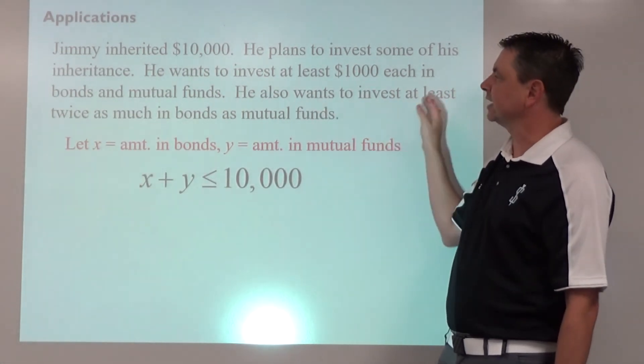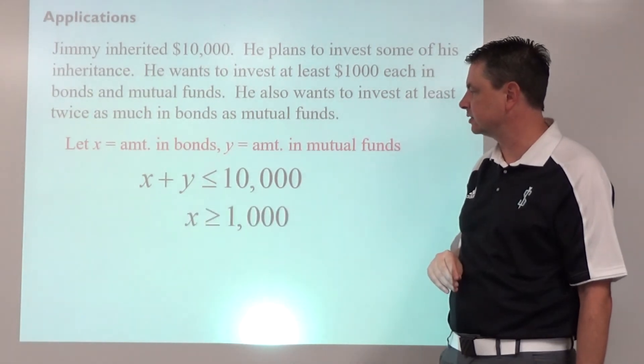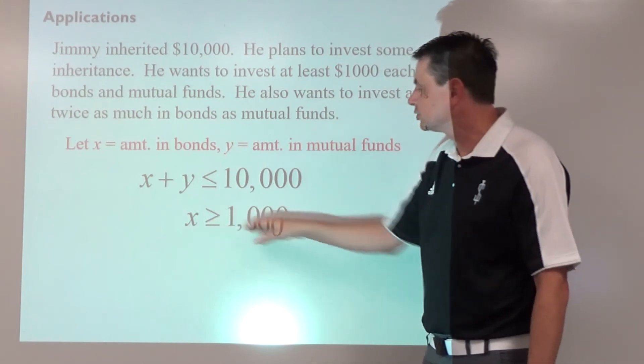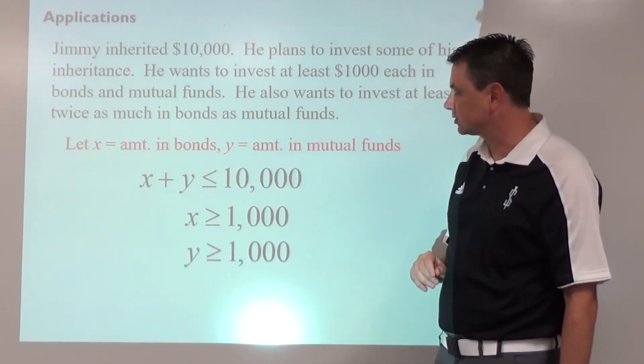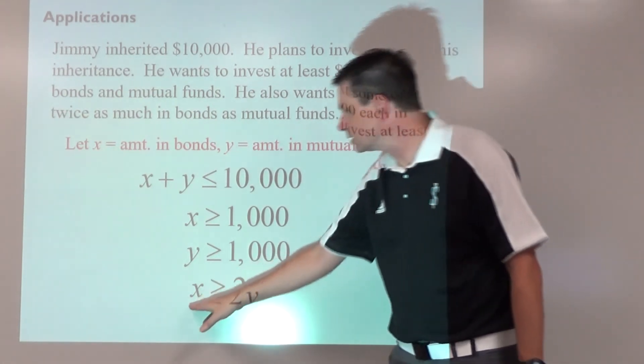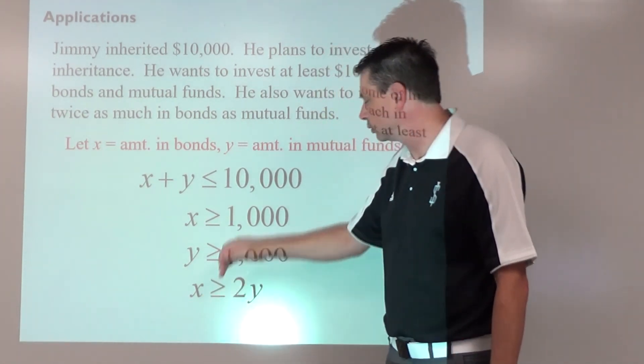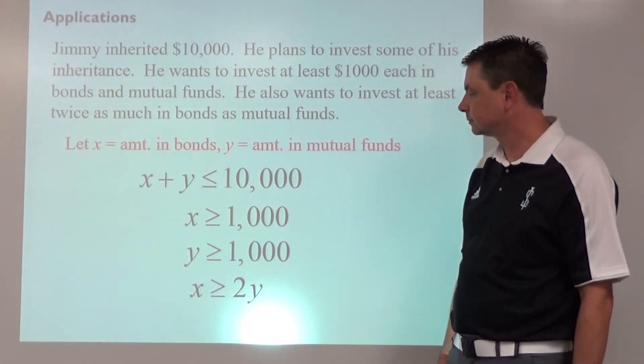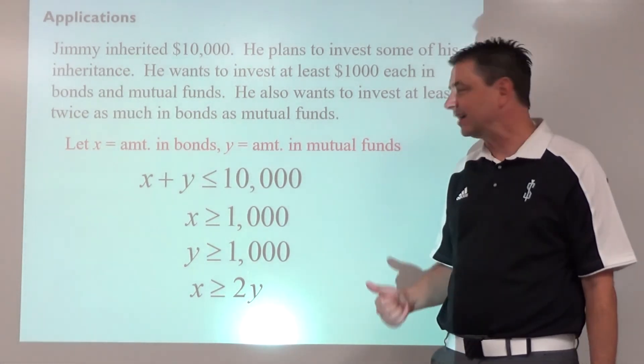And then he wants to invest at least twice as much in bonds as mutual funds. We've got the $1,000 minimum—I forgot about that—so x has to be greater than or equal to that $1,000, y has to be greater than or equal to $1,000, and the amount in bonds is greater than or equal to two times the amount in mutual funds. All right, so we need to graph those.